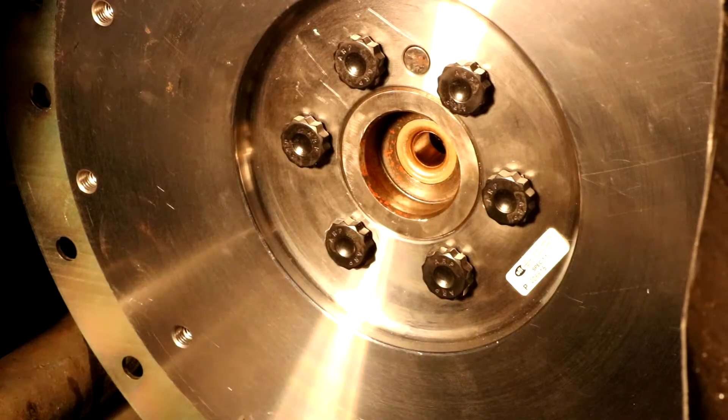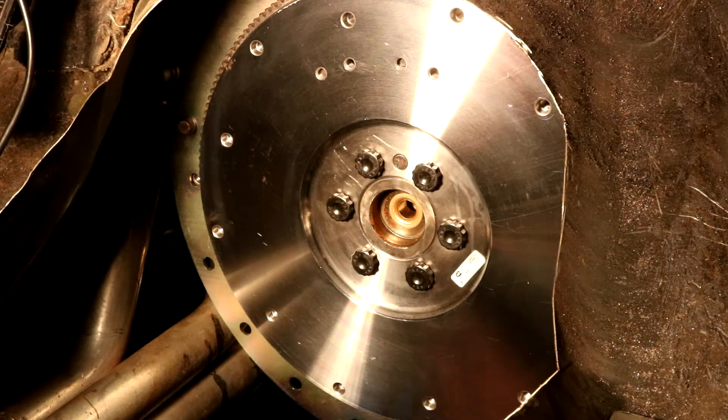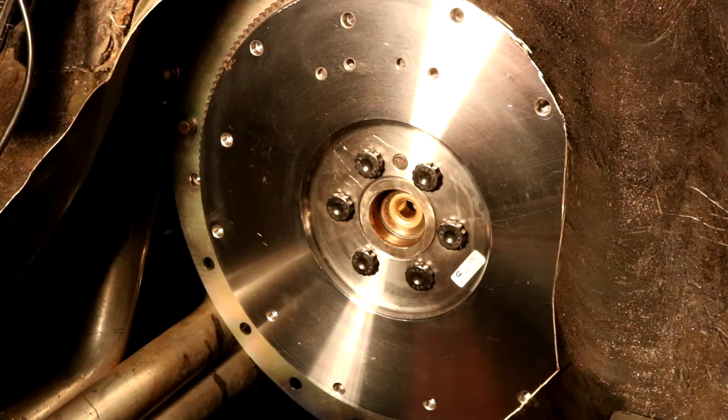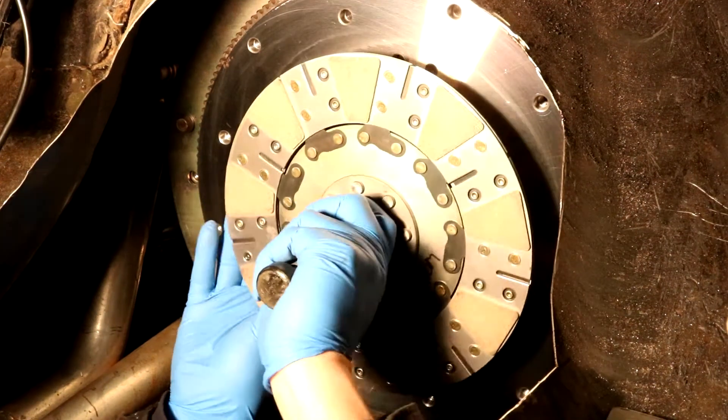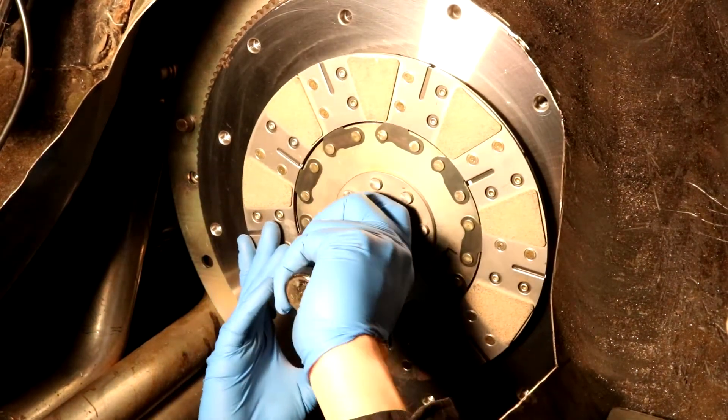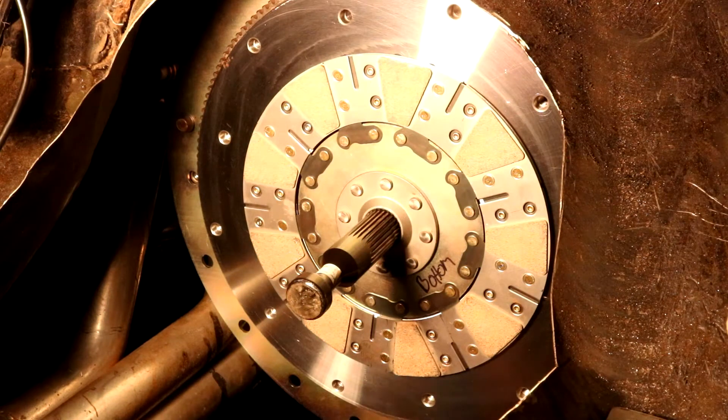I can now install my McLeod RXT dual disk clutch. Make sure your flywheel surface and pressure plate surfaces are clean. You don't want any dirt or grease on it. So then you can put your adapter plate on.